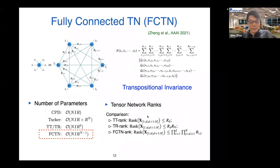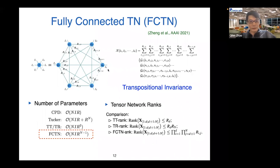To further enhance model expressiveness, we also introduce the fully connected tensor network, where all core tensors are connected to each other. A big advantage is transpositional invariance — if the original data X is permuted arbitrarily, the result is invariant. The disadvantage is a much larger number of parameters, which scales exponentially with order N. However, theory shows a relationship between the unfolding matrix rank and the fully connected tensor network rank, so in practice each connection can have a very small rank R.